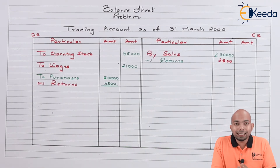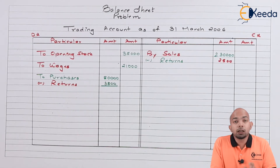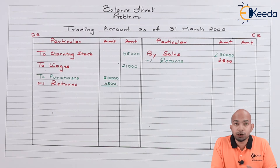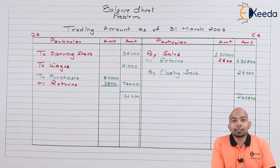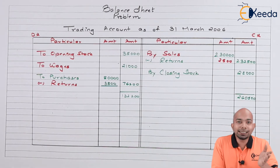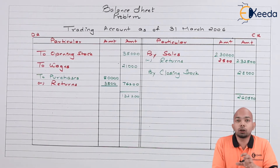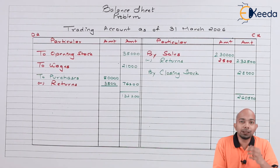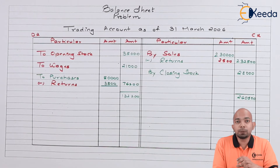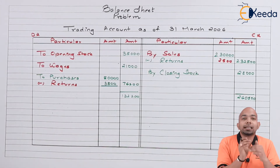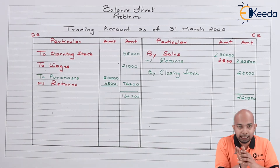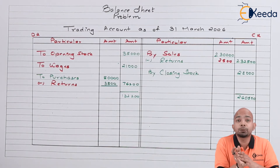The amount for purchases has been written in the inner column because there is a purchase return to adjust. We'll write the net amount of purchases in the outer column. Now we mention the closing stock from the adjustment — make sure the second effect is also mentioned in the balance sheet. The interim balance shows the debit side is lower than the credit side, which means we have earned a gross profit, which will be mentioned on the debit side to balance both sides.